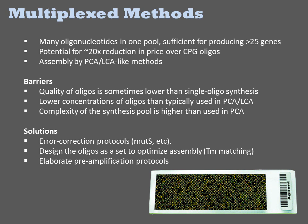Because there is less separation of the reactions into parallel assemblies, and less phosphoramidite is employed due to the lower amounts of material present, these procedures will ultimately result in a 20-fold reduction in price relative to CPG oligos.